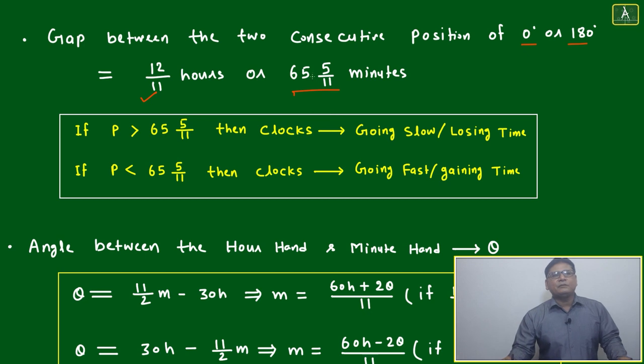This is the standard measurement between two consecutive meetings, either at zero degrees or 180 degrees. Don't calculate zero degree and next 180 degree—only two zero degrees or two 180 degrees consecutively. This is the time gap: 11 times they meet in 12 hours, so 12 by 11 equals 65 and 5 by 11 minutes.